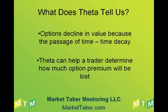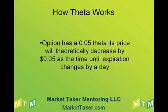Theta can help a trader determine how much option premium will be lost. How Theta works: if an option has a 0.05 Theta, its price will theoretically decrease by 5 cents currently as the time until expiration changes by a day. Theta is going to change every day, so currently at a Theta of 0.05, we expect to lose about 5 cents off that option.